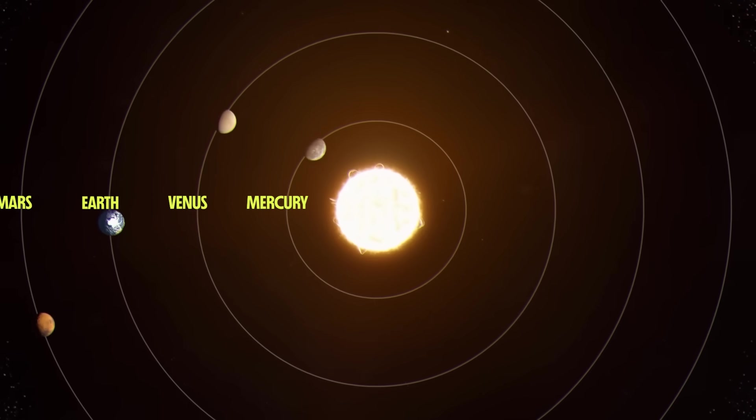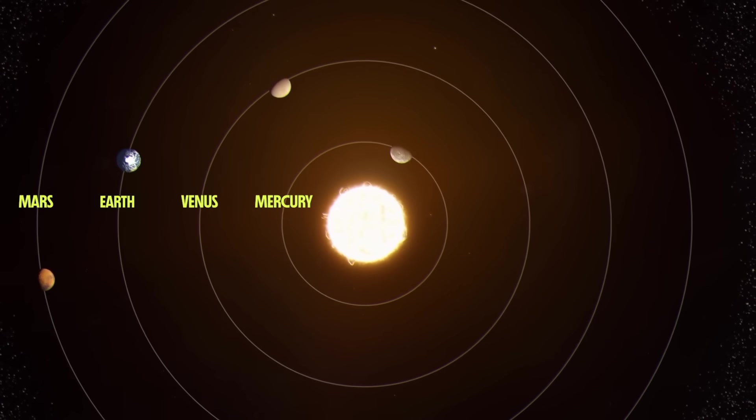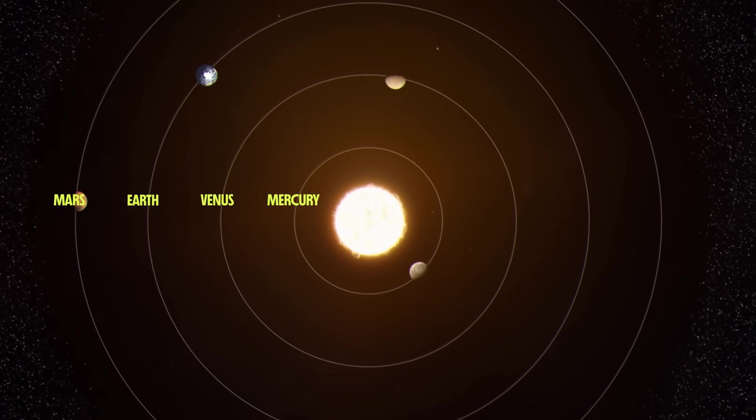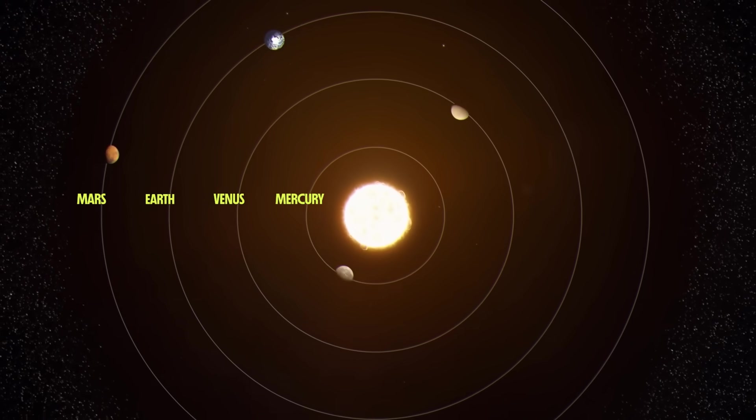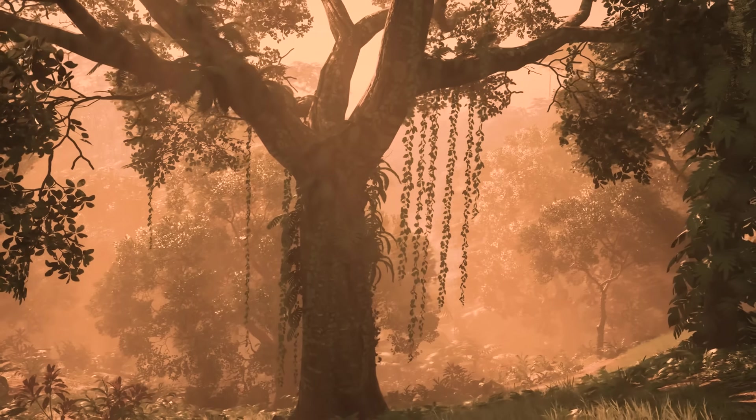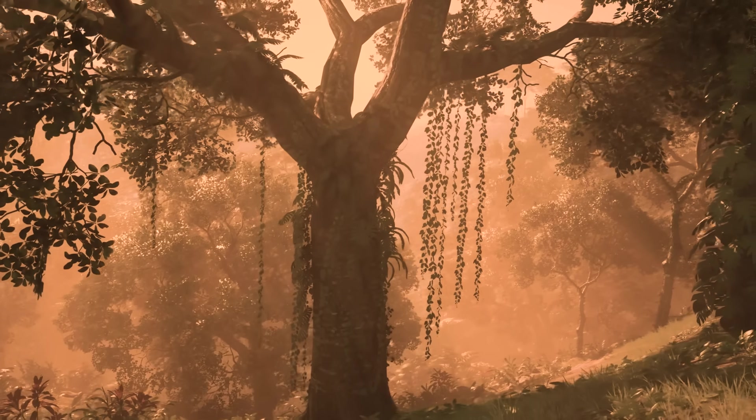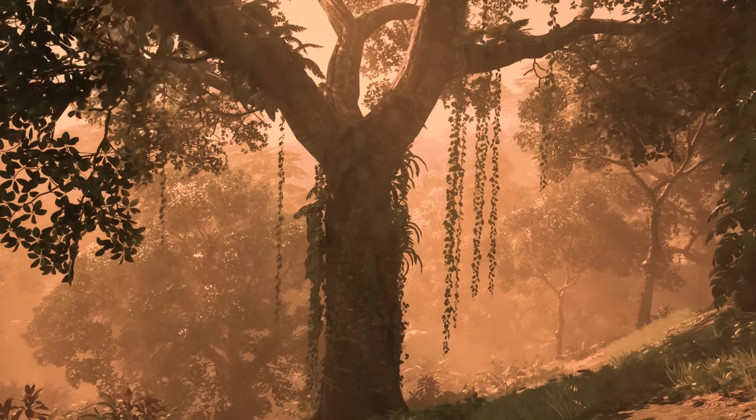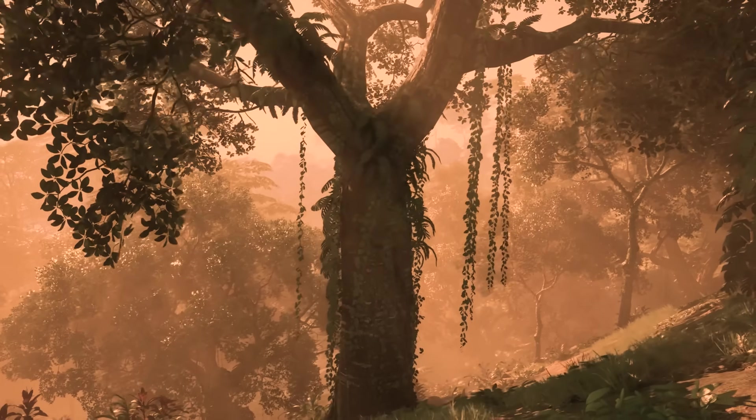And since Venus is even closer to the Sun than Earth, it must be warm down there, which at the time captivated the imagination of those of us on Earth. Our closest relative could be a lush tropical rainforest brimming with alien insects and reptiles.